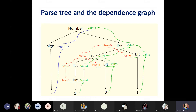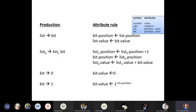A parse tree along with the attributes mentioned — including the flow of how values are passed — is called a dependence graph. We have discussed the attributes and the flow of values. Some attributes are assigned from the left-hand side of the production rule to the right-hand side, so left-to-right or right-to-left movement is allowed.